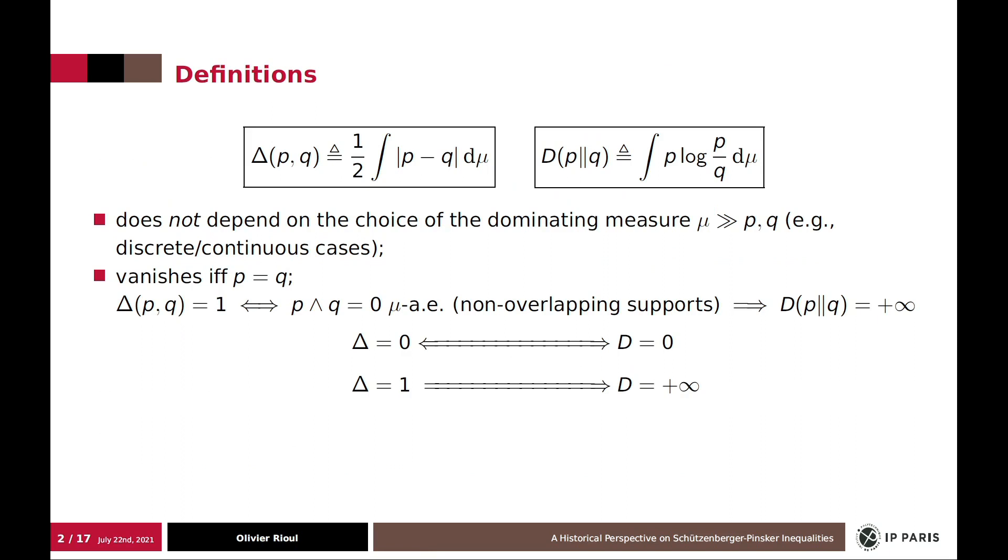It is well known that delta lies between 0 and 1, total variation, because of the one-half factor. All quantities equal 0 if and only if the two distributions coincide. However, delta is a distance, related to the L1 distance, but D is not. Delta is 1 if and only if the two distributions have non-overlapping support. And in this case the divergence goes to plus infinity, so it's unbounded.